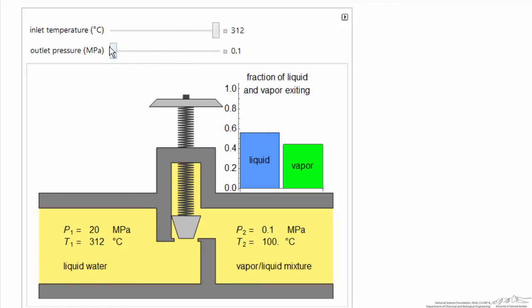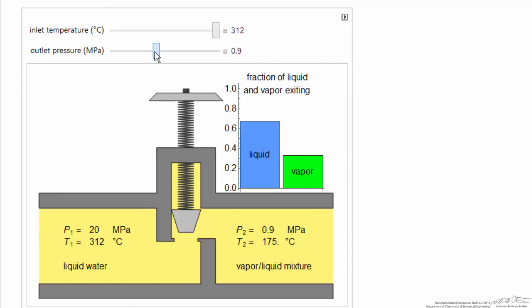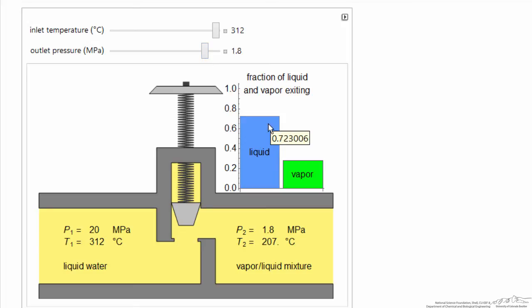As I raise instead the outlet pressure, the corresponding saturation temperature also goes up, and notice the fraction of vapor decreases. We have a smaller fraction evaporating because the higher temperature means there's not as big a temperature drop between the inlet and the outlet.